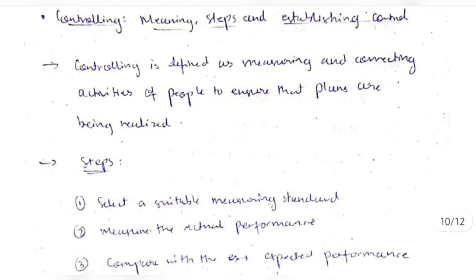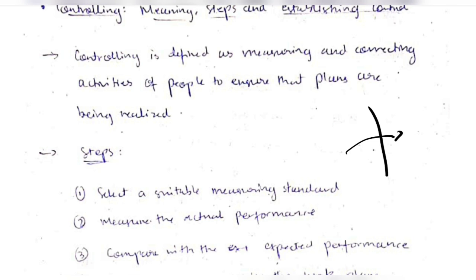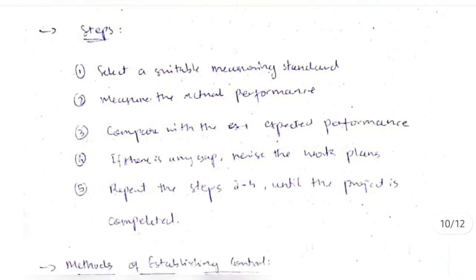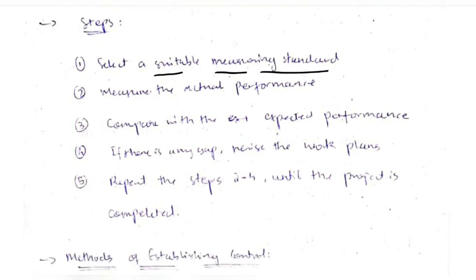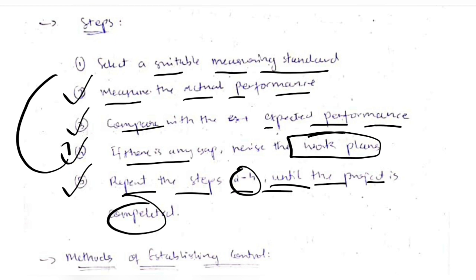Controlling means measuring and correcting the activities of people, and maintaining a limit that should not be crossed. If it is crossed, measures are taken to prevent it next time. The steps in controlling are: establish a suitable measuring standard, measure actual performance, compare it with the expected performance, identify any gap, revise the work, and repeat steps until the project is completed.